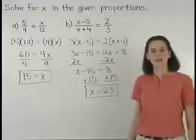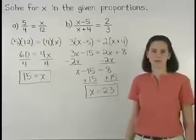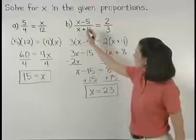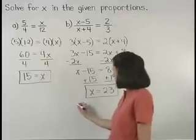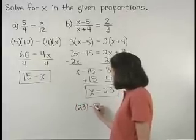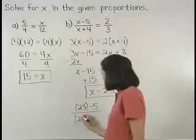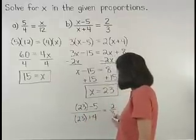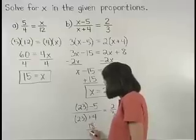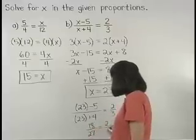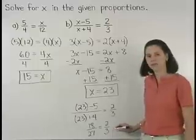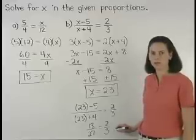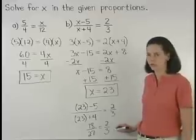Finally, it's a good idea to check the answer in these types of problems. For example, if we plug a 23 back in for the x in part B, we have 23 minus 5 over 23 plus 4 equals 2 thirds, or 18 over 27 equals 2 thirds. And 18 over 27 equals 2 thirds is a true statement because 18 over 27 reduces to 2 thirds.